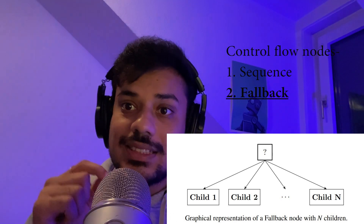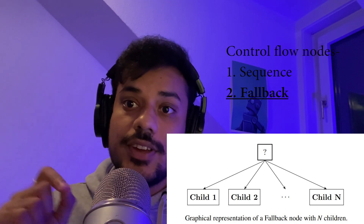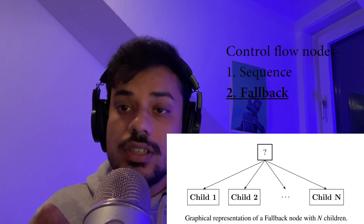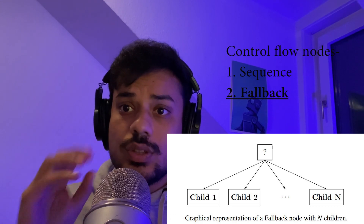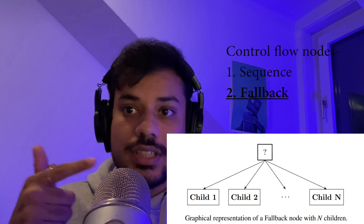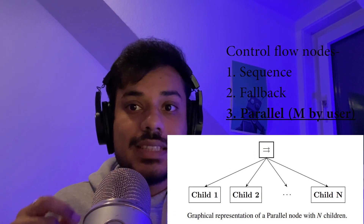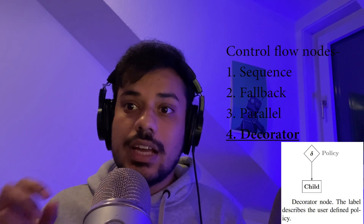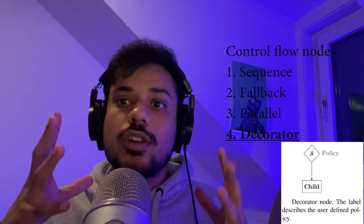A fallback node routes ticks to its children from left to right until it finds a child which returns either success or running — only if all child nodes return failure does it return failure. A parallel node routes ticks to all its children and returns success if m of these nodes return success, returns failure if n minus m plus 1 nodes return failure, and otherwise returns running. A decorator node adds functionality to a child node — for instance, allowing the child to fail n number of times.